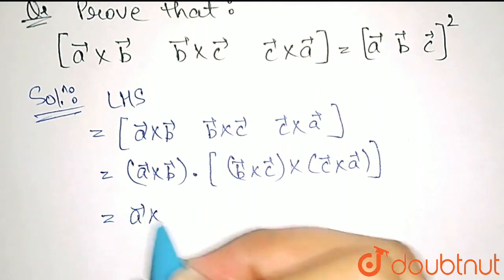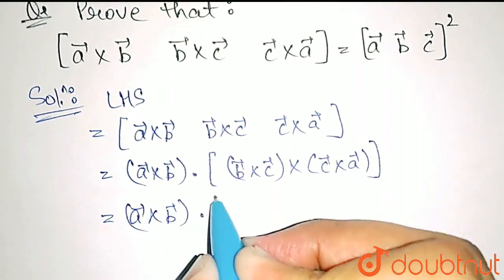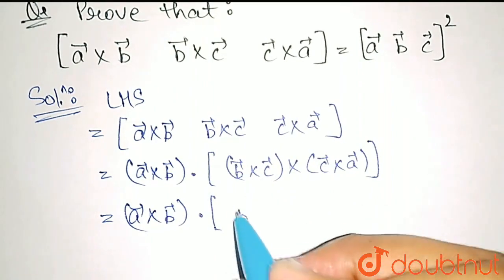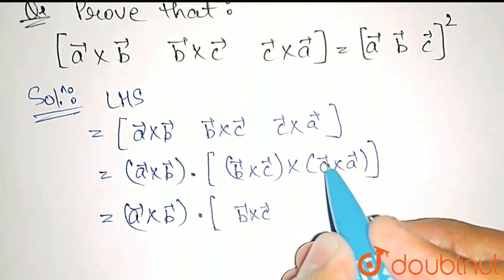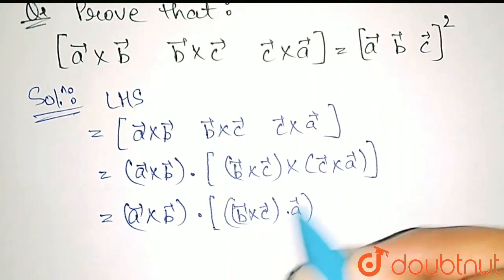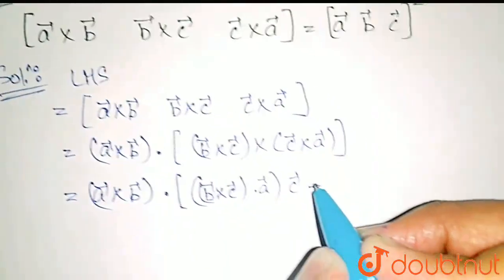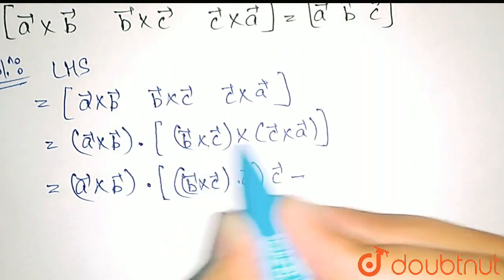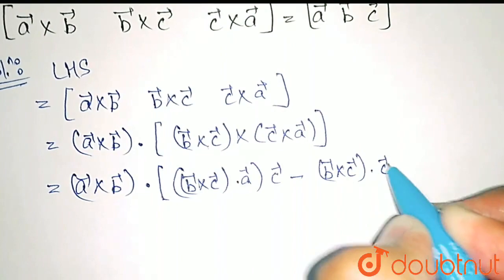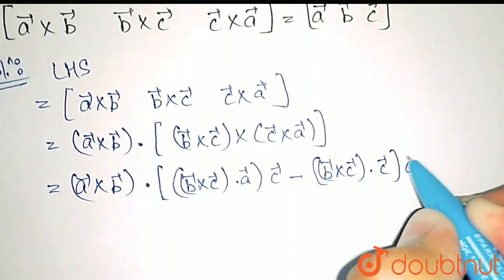So now, first of all, what we need to do is solve this, and we know how to solve this. First of all, we will get B cross C dot A vector, C vector minus - the second expression is B dot C, B cross C dot with C vector and A vector here.